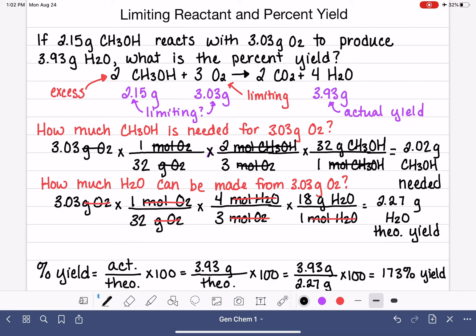So when you have a percent yield that's greater than 100, this just simply means that somebody did something really wrong in the lab. Something is wrong in the lab.